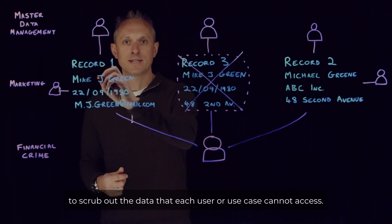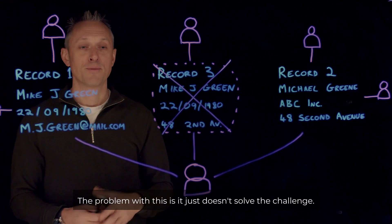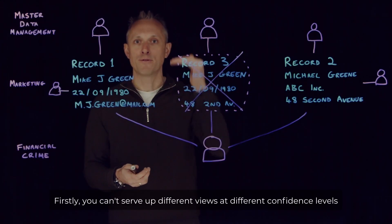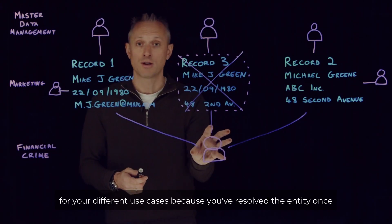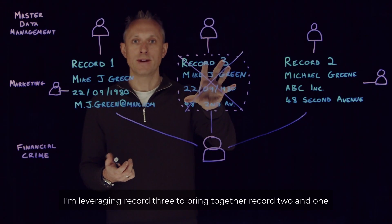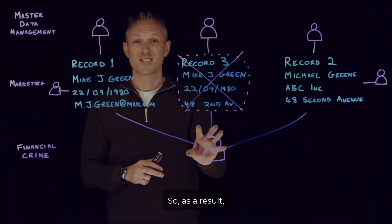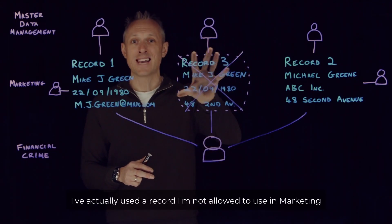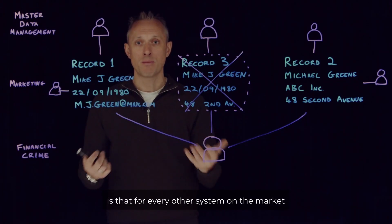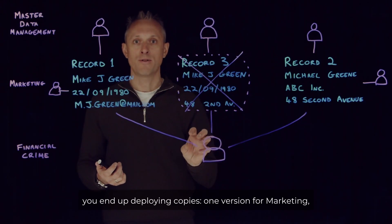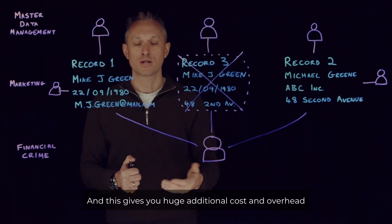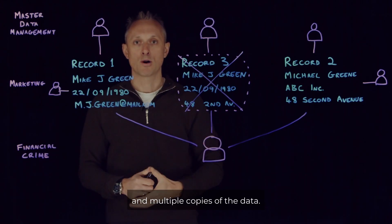The problem with data masking is it just doesn't solve the challenge. Firstly, you can't serve up different views at different confidence levels for your different use cases because you've resolved the entity once. And secondly, you leak data — I'm leveraging record three to bring together record two and one, so I've actually used a record I'm not allowed to use in marketing to generate that view. This ultimately means that for every other system on the market, you end up deploying copies: one version for marketing, one for financial crime, one for master data management. This gives you huge additional cost and overhead for managing multiple copies of the system and multiple copies of the data.